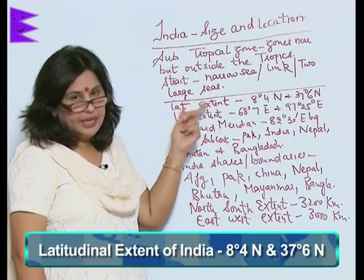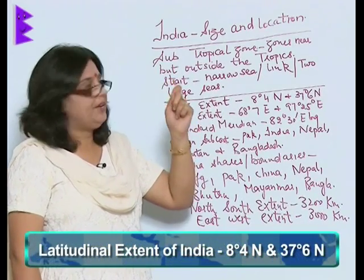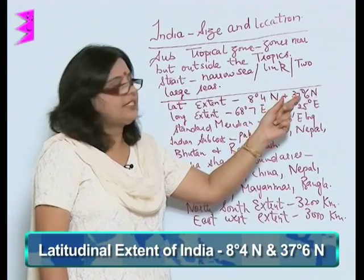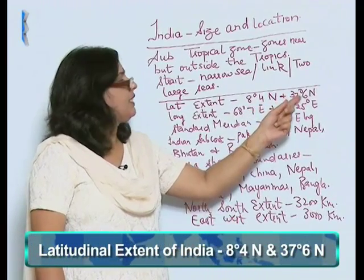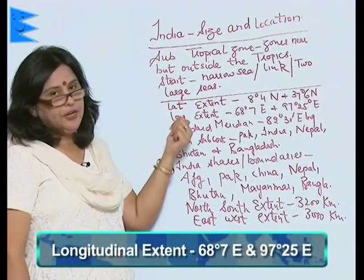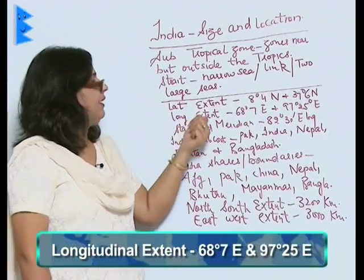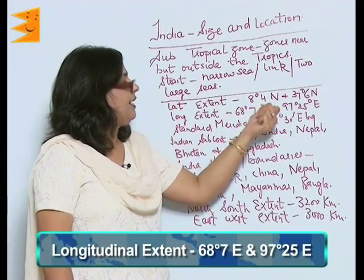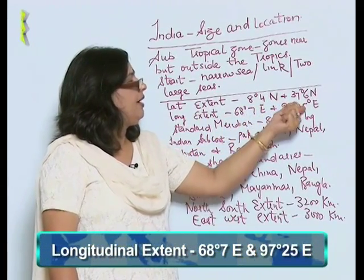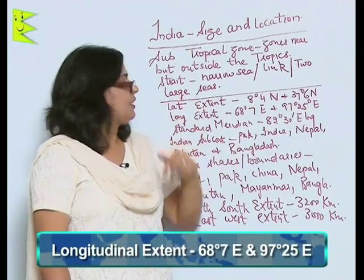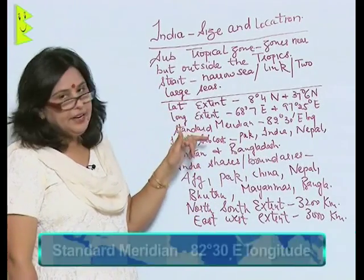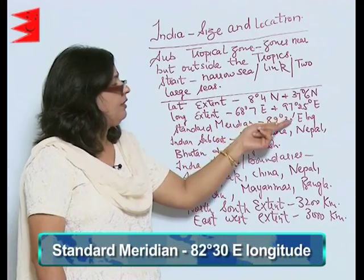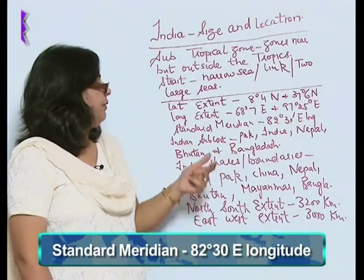The latitudinal extent of India is 8°4' North to 37°6' North. The longitudinal extent is 68°7' East to 97°25' East longitude. The standard meridian of India is 82°30' East longitude.